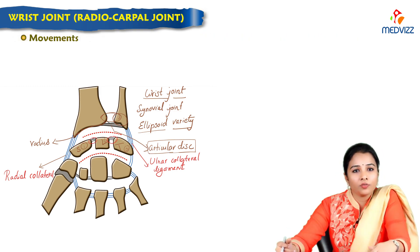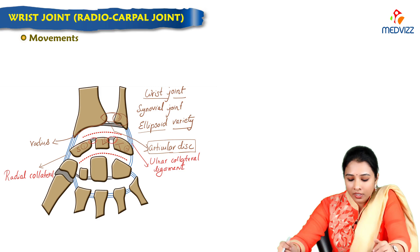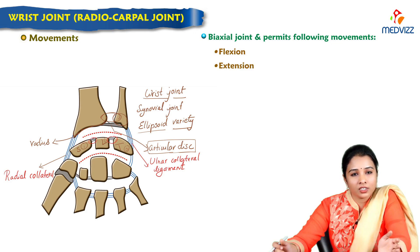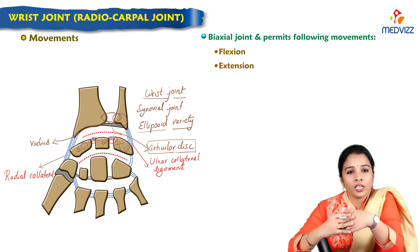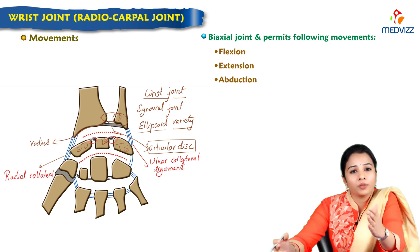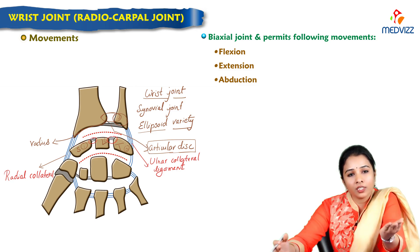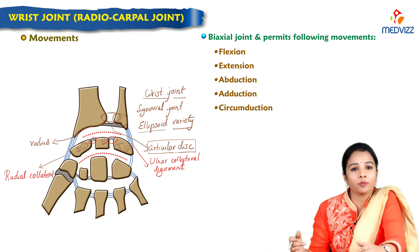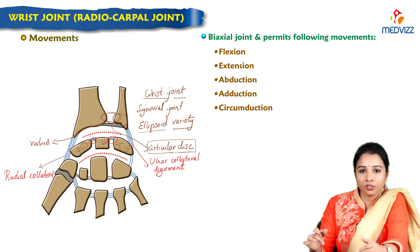The wrist joint is a biaxial joint and permits flexion, extension, abduction, and adduction. The combination of all these movements together is called circumduction. These are the movements happening at the wrist joint.